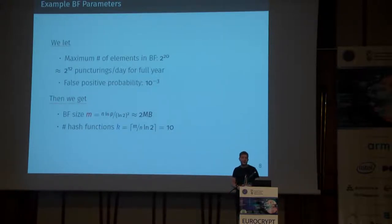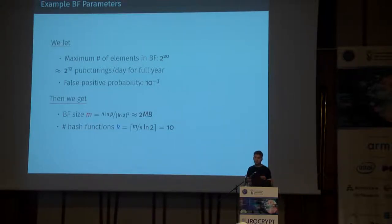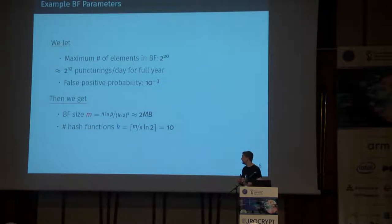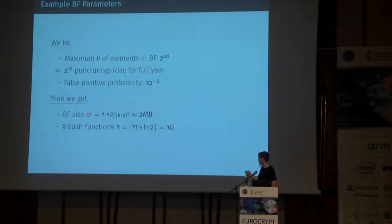Here is an example of our construction. If we want to support a maximum number of 2 to the power of 10 — which roughly amounts to the market range per day for a year — and a false positive probability of 10 to the minus 3, we basically get the corresponding Bloom filter parameters. What is quite important is the number of hash functions, which directly determines the number of keys we need to index, and this number is quite low — for these parameters we got k equal to a small constant.